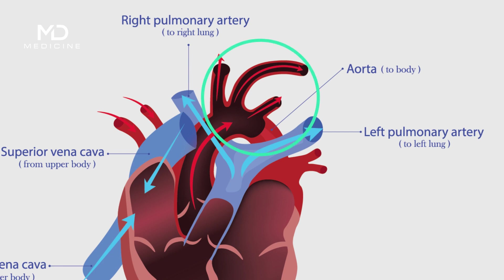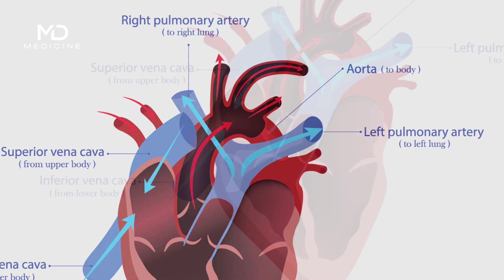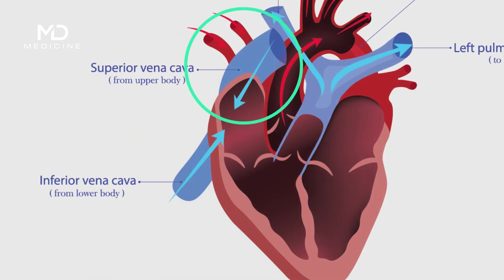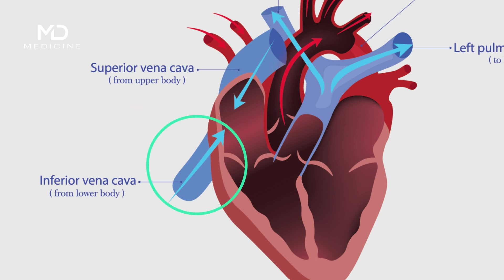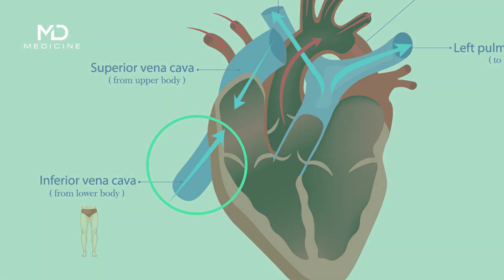The aorta pumps oxygen-rich, oxygenated blood from the heart's left ventricle to the entire body. The superior vena cava is the primary vein running from the head and arms that brings deoxygenated blood back to the right atrium. The inferior vena cava runs from the lower part of the body and brings deoxygenated blood back to the right atrium.